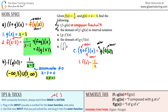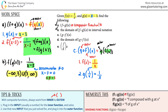I can't simplify 1 over x, so that becomes my new input for the outer function g. For every x value in the g function, I plug in 1 over x. So g of 1 over x equals 1 over x minus 3. I can't simplify that, so the answer for part c is 1 over x minus 3. This is also written as g composed with f at x.